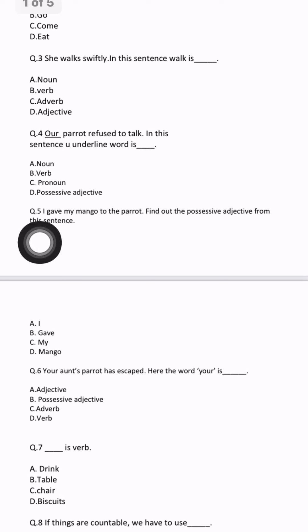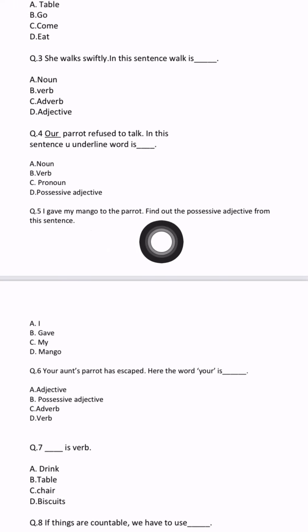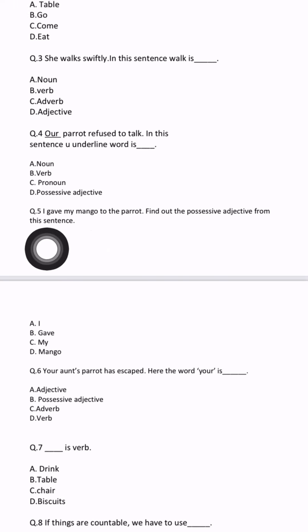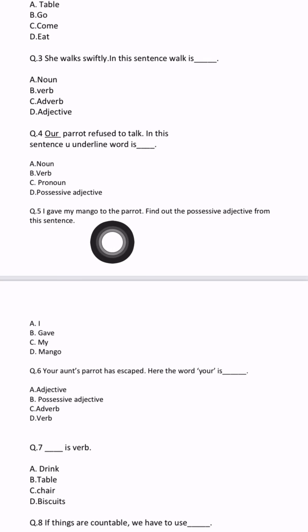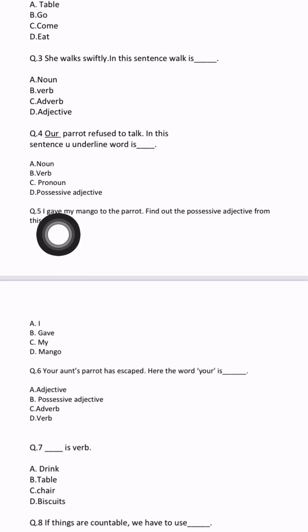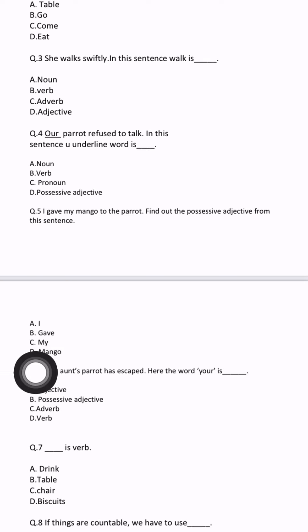Question number 5: 'I gave my mango to the parrot.' Find out the possessive adjective from the sentence. 'My' will be the possessive adjective. So you can select answer C — my — possessive adjective.